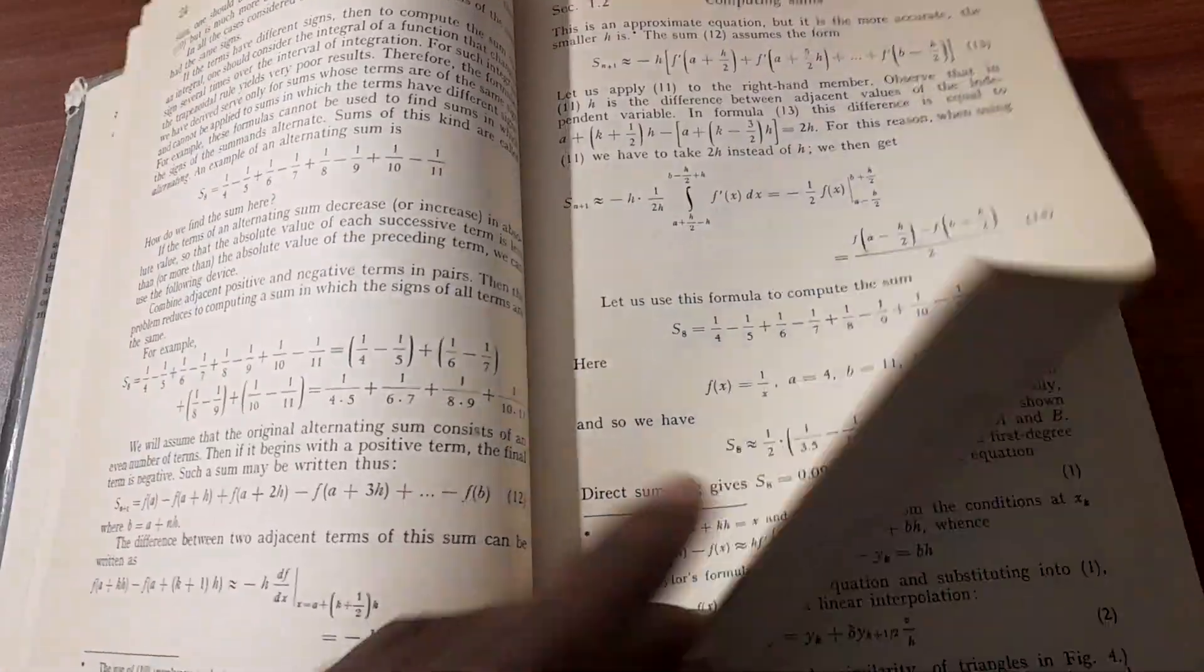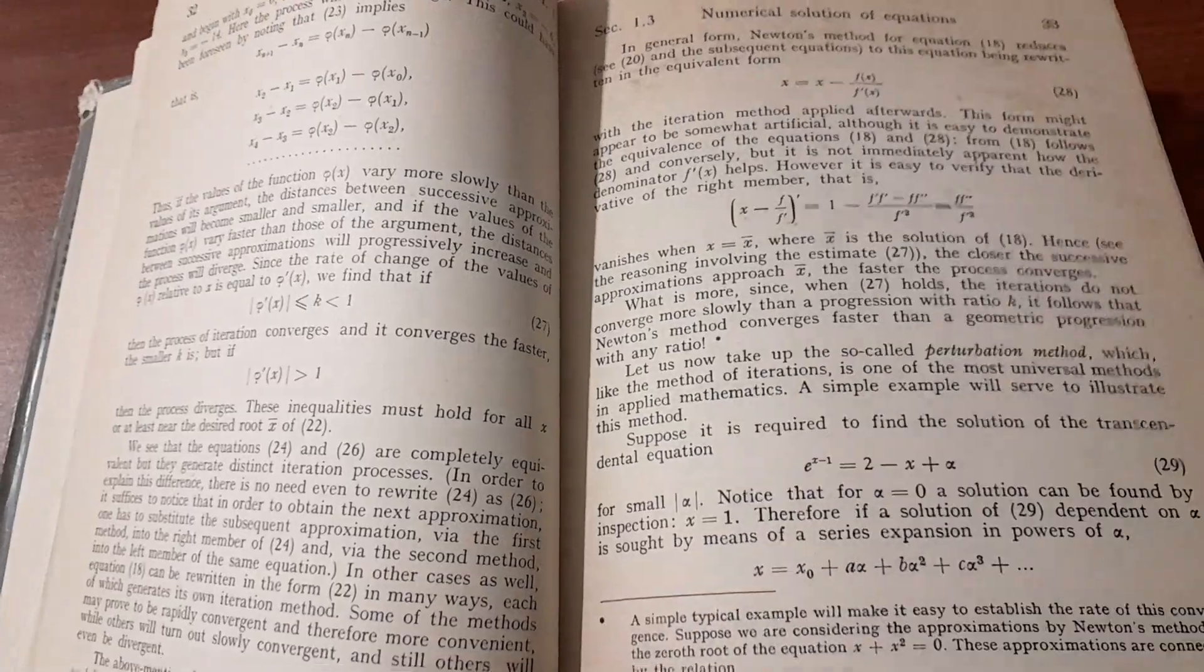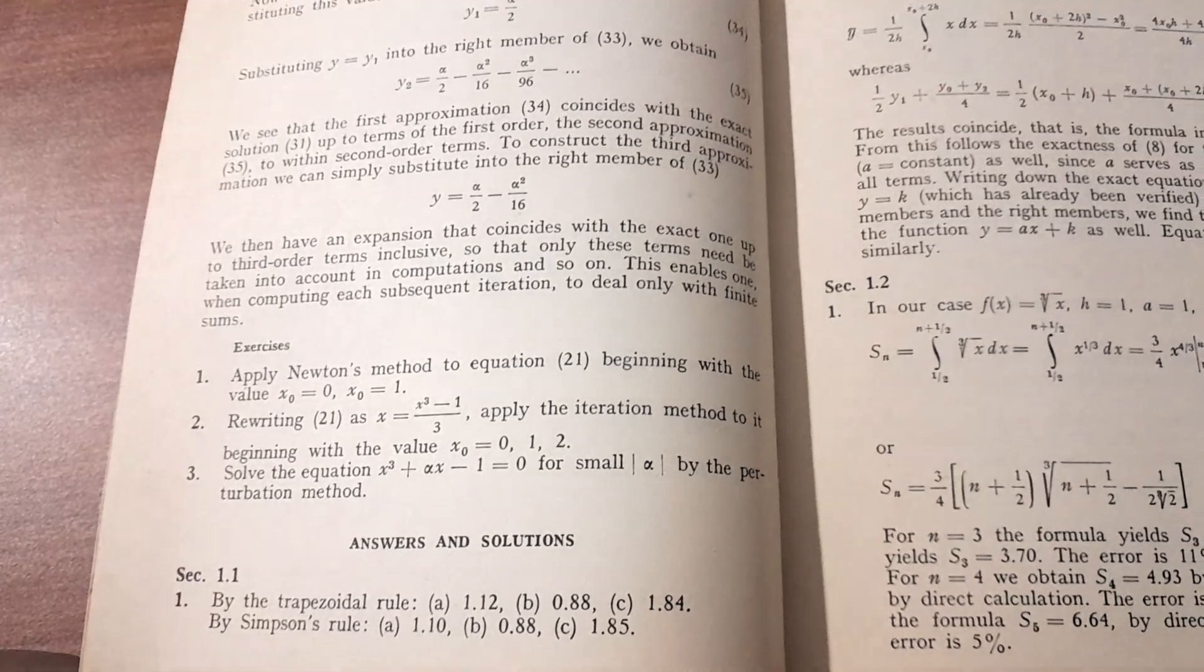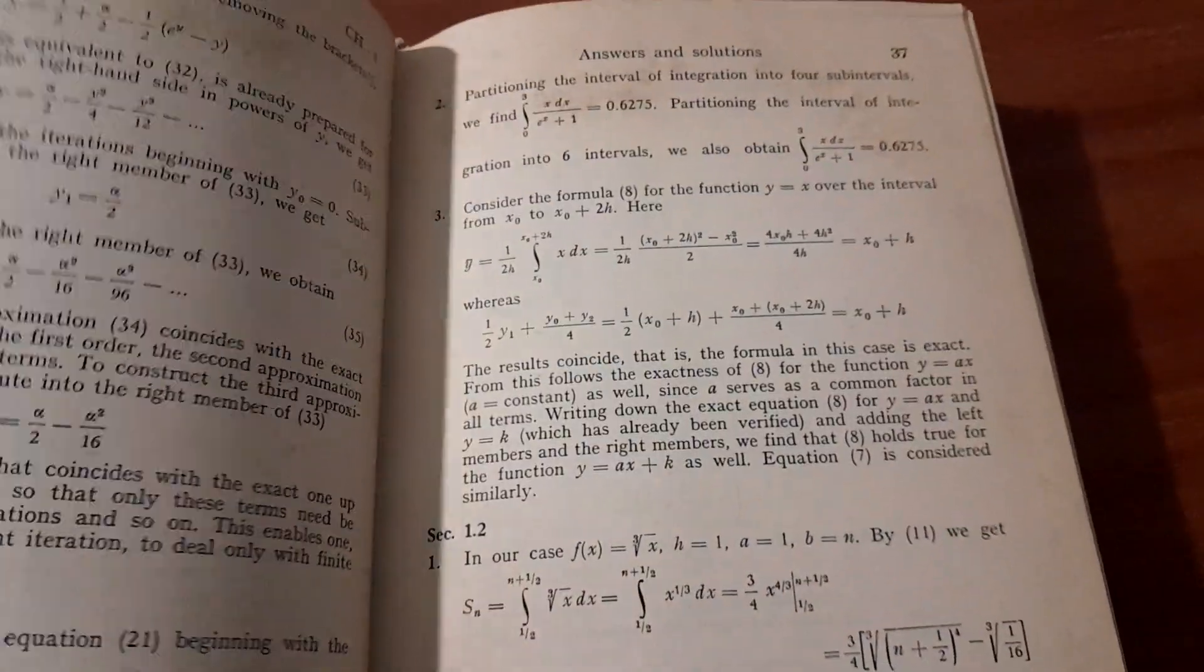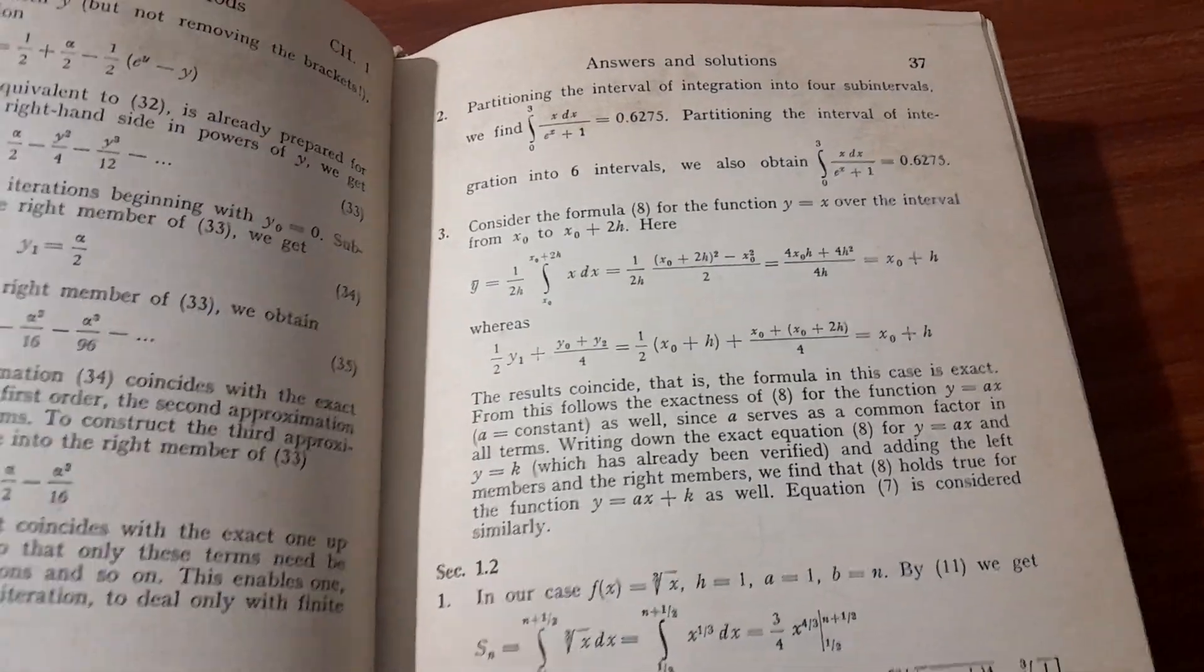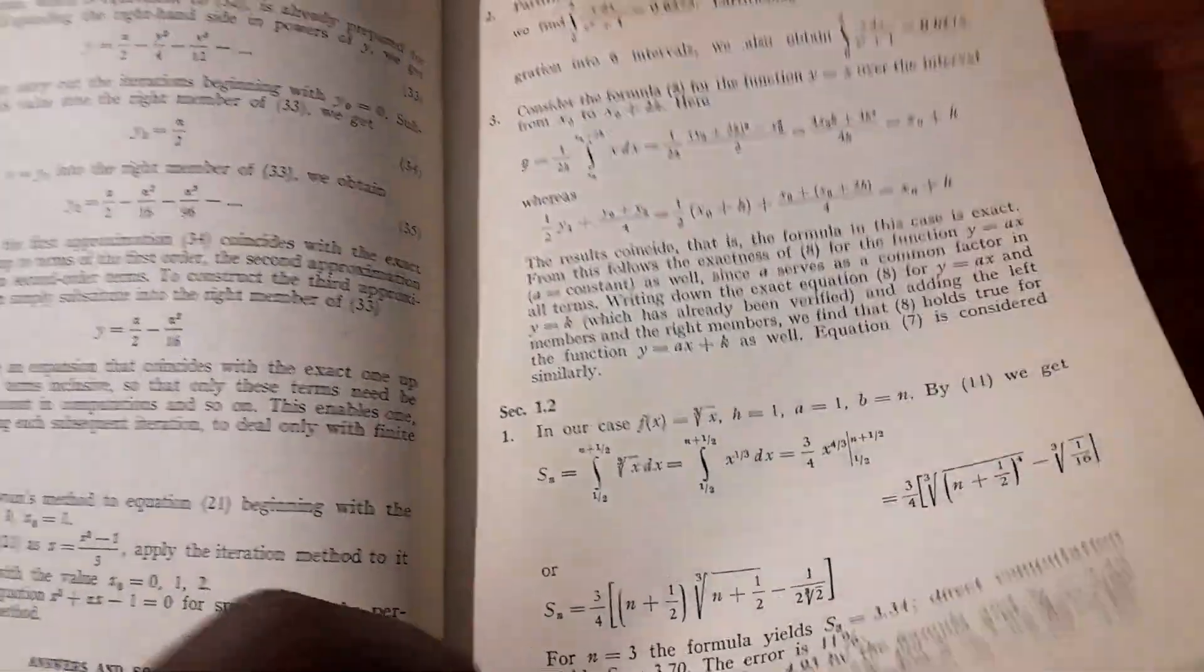Likewise you have for 1.2, you have some exercises, and at the end of the chapter you have answers and solutions. You have answers and solutions for all the questions. That's how this book is organized.